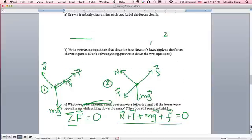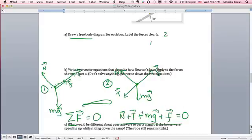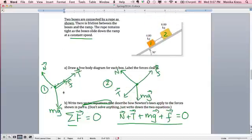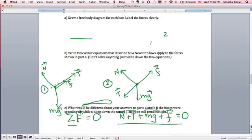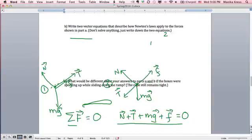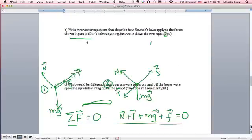The very last question says, what would be different about your answers to parts A and B if the boxes were speeding up, sliding down the ramp? There actually wouldn't be anything different about either of these free body diagrams. They would look exactly the same if they were speeding up. The difference in part B would be that the sum of the forces would equal MA. For this part, I didn't want to see any breaking down of components. Don't worry about angles. I just wanted to see the vector equation. I want to see that you know how to use these arrows correctly, because that really is a critical part of developing the mathematical skills to succeed in these rigorous mathematical majors that you have chosen.